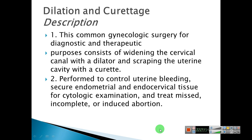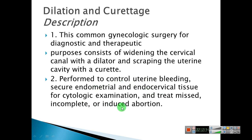Dilation and curettage (D&C). You may have heard of or seen this procedure in theatre. Description: this common gynecologic surgery for diagnostic and therapeutic purposes consists of widening the cervical canal with a dilator and scraping the uterine cavity with a curette. It is performed to control uterine bleeding, obtain endometrial and endocervical tissue for cytologic examination, and treat missed or incomplete induced abortions.